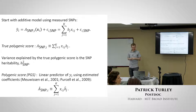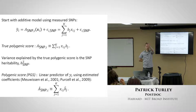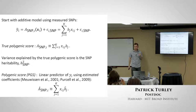The true and estimated polygenic scores differ because we don't have all the SNPs. For example, if two causal SNPs are in perfect LD but we only observe one, the signal from the unobserved SNP gets absorbed into its neighbor, so that SNP will try to take the role of both. This makes the estimated weights a little different from the ideal ones.